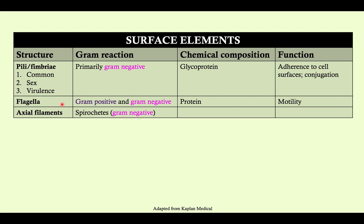Flagella are found on both gram-positive and gram-negative organisms. They are composed of protein and are responsible for motility. Then there are axial filaments, which are primarily found on spirochetes — our Borrelia, Leptospira, and Treponema. Those are spirochetes. They are technically all gram-negative, but I did not include them in the algorithm here because there are special components to consider. When we finish gram-negatives and move into spirochetes, you'll see why I didn't include them.